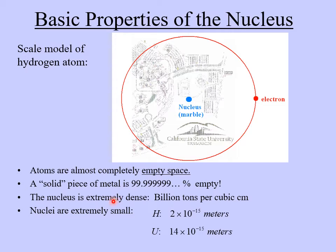The nucleus is extremely dense — its density is billions of tons per cubic centimeter. Even the largest nucleus, such as uranium, is only about 14 femtometers (10⁻¹⁵ meters) in diameter, and the nucleus is anywhere from 30,000 to 50,000 times smaller than the entire atom in terms of diameter.